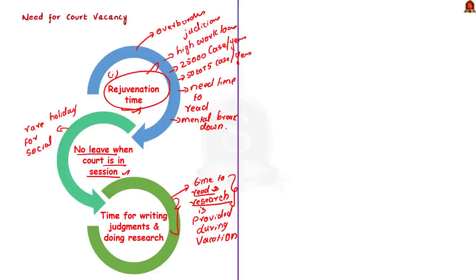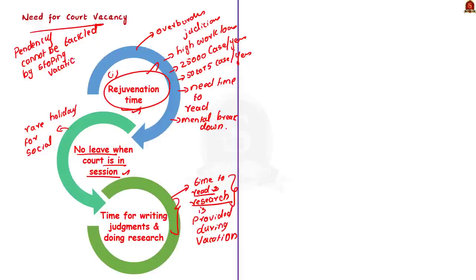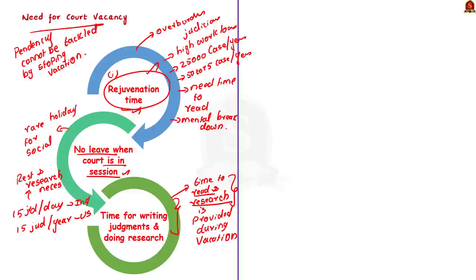Finally, the argument that cutting vacation would solve pendency is not backed by data, as pendency relates largely to legacy cases that need to be tackled systematically. We cannot expect the judiciary to work round the clock and deliver high quality judgments. Our Supreme Court website shows the court gives a minimum of 10 to 15 judgments per day, while US federal courts give a maximum of 10 to 15 judgments a year. It is universally accepted that if you want efficacy, you must give judges proper time to prepare proper judgments.